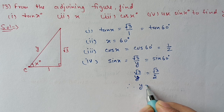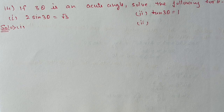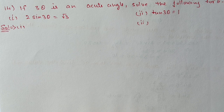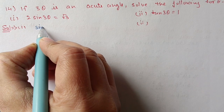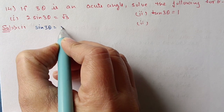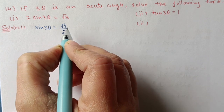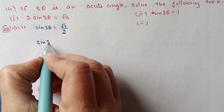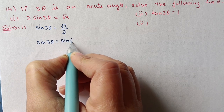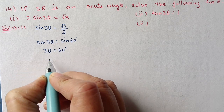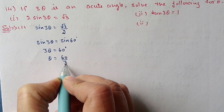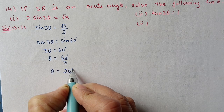By comparison, y equals 2. Next, Question 14: If 3 theta is an acute angle, solve the following for theta. First part: 2 sin 3 theta equals root 3. Shifting 2 to the other side, sin 3 theta equals root 3 by 2. Root 3 by 2 is the value for sin 60 degrees, so we replace it with sin 60 degrees. This means 3 theta equals 60 degrees, and theta equals 60 by 3, which is 20 degrees.